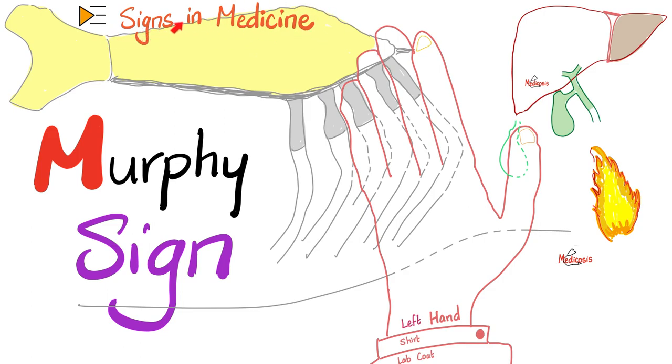In previous videos, we have talked about the Hohmann sign, Koenig sign, Brudzinski sign, Obstetrics hand sign, and Gynecologist hand sign.